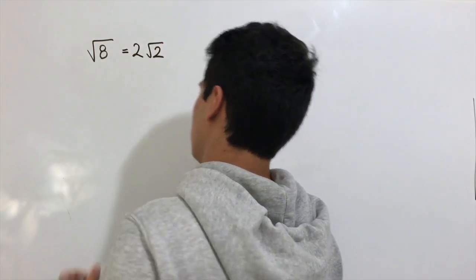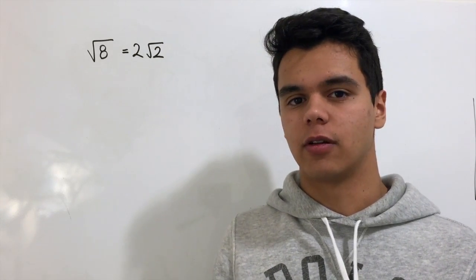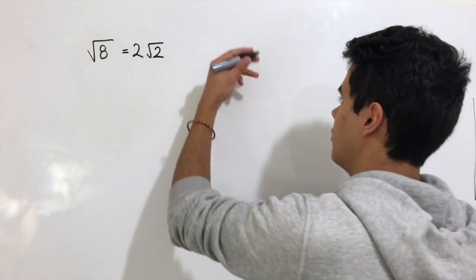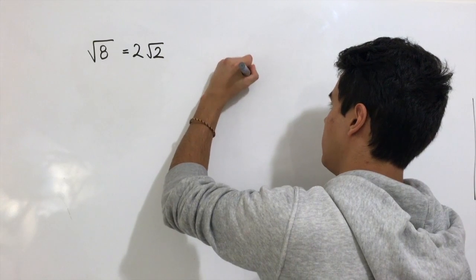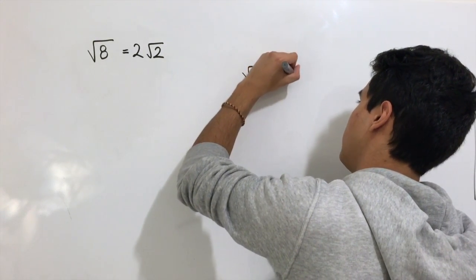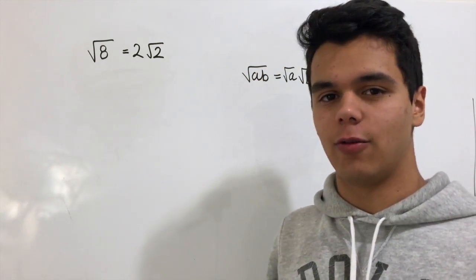There's one thing that we have to keep in mind when we're solving this type of question. We have to know the property of radicals that says the square root of a times b is equal to the square root of a times the square root of b.